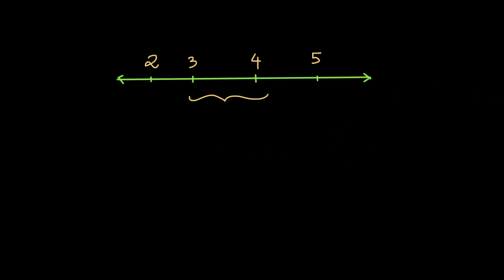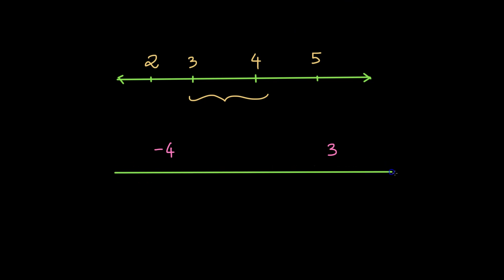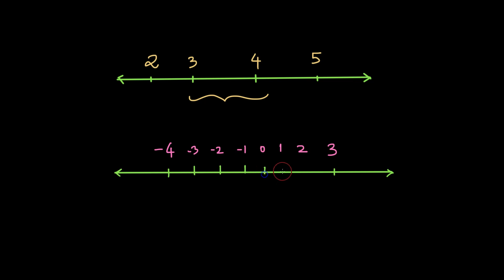Similarly for integers, if you ask how many integers are between -4 and 3, I can draw a number line. After -4 I have -3, -2, -1, 0, 1, 2, and 3. Counting: 1, 2, 3, 4, 5, and 6. So I have 6 integers between -4 and 3.